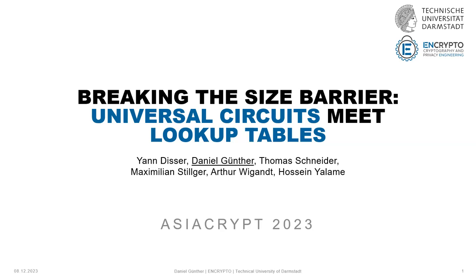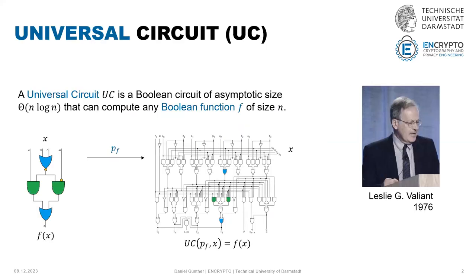This talk is mainly about universal circuits. A universal circuit is a special circuit first introduced by Valiant in 1976, and this circuit has the ability to compute any function up to a given size. If we have a function of a particular size — namely the number of inputs, outputs, and gates — then we can find some programming bits to program the universal circuit to evaluate exactly this function.